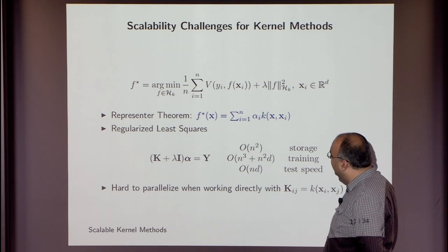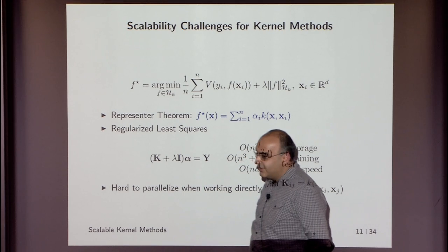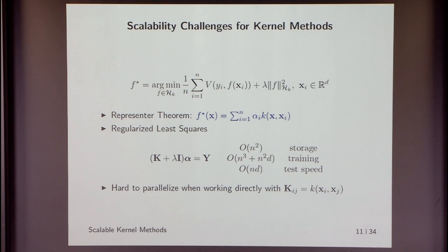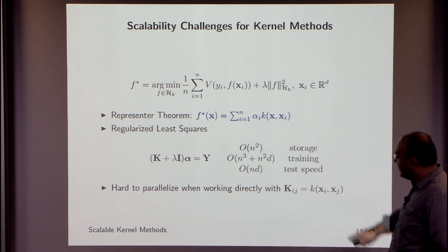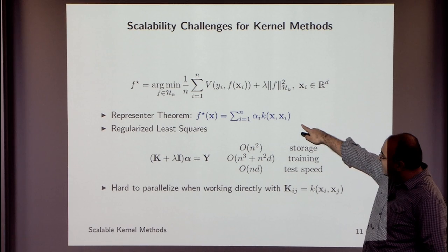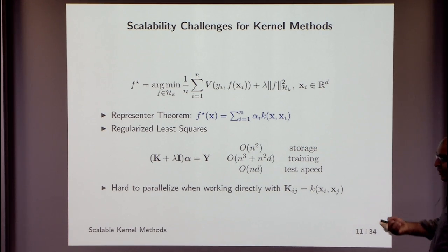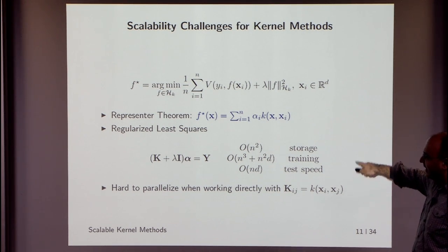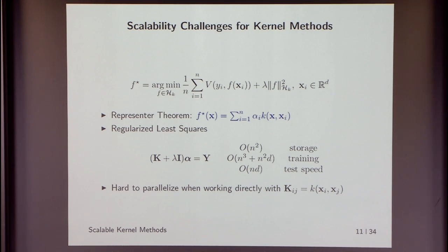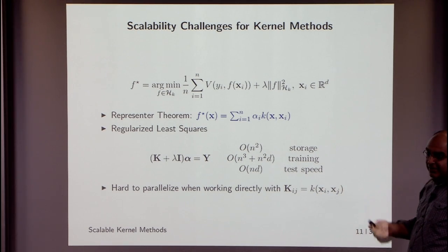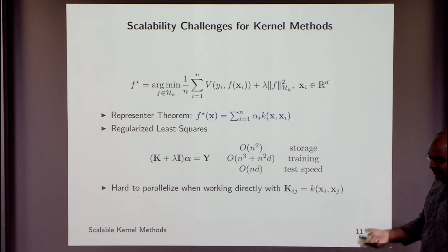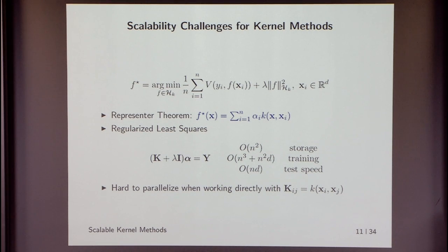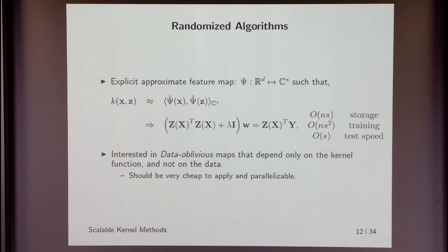The running example kernel will be the Gaussian kernel. Solving this linear system involves a big matrix requiring O(n²) storage, dense linear algebra with O(n³) training time, and at test time prediction requires revisiting all training data at O(nd). This is very unappealing in the age of big data. It's also hard to parallelize because kernel matrix elements k_ij require every pair of points to meet at some processor.